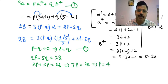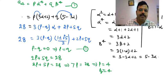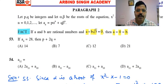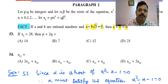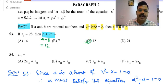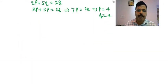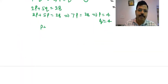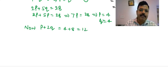With p = 4 and q = 4, the value of p + 2q = 4 + 8 = 12. So p + 2q equals 12. This completes the solution to Question 53.